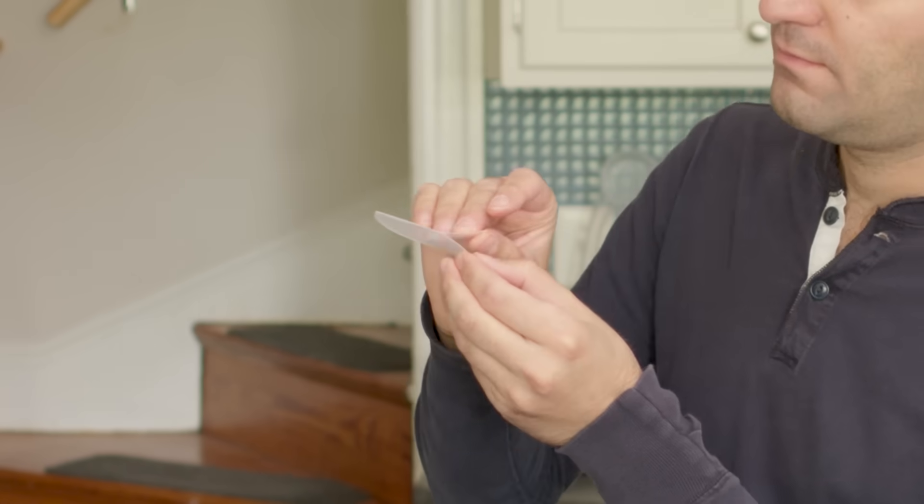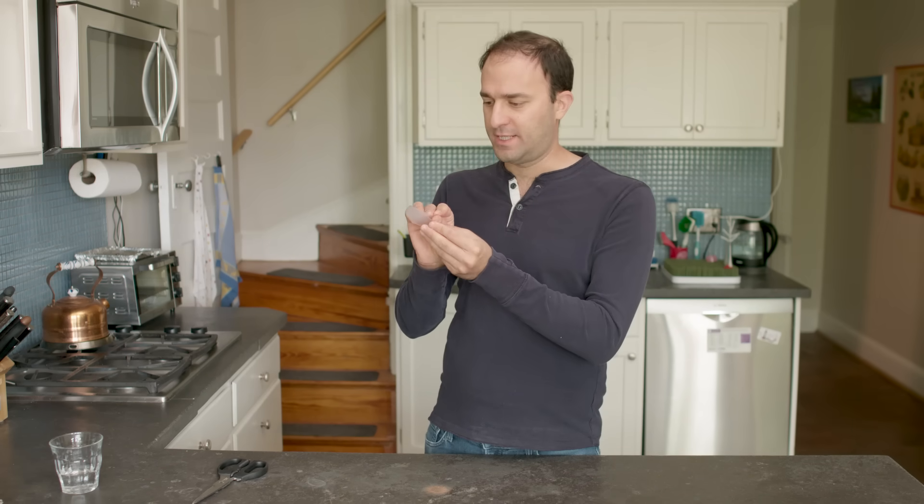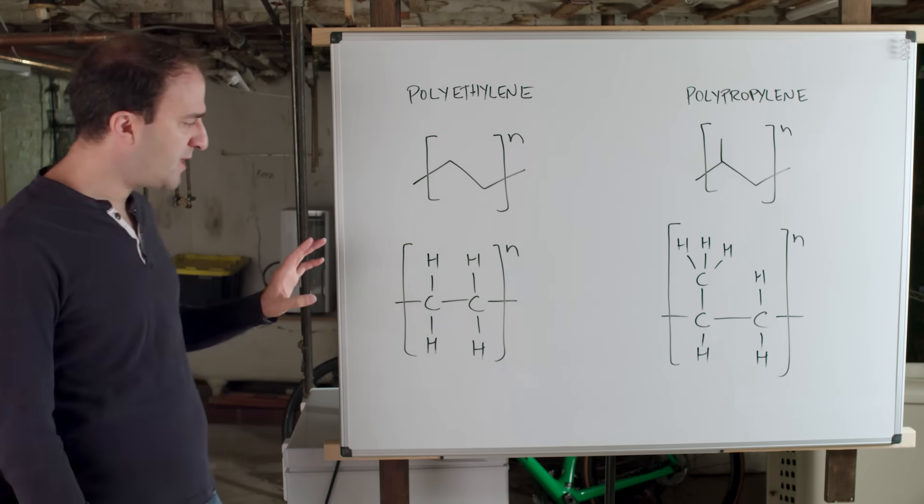Here we have two pieces of polypropylene bonded together by superglue. Let's see what happens. Yeah, it doesn't hold at all. Wow, that was shockingly easy to unstick. This is an interesting clue.